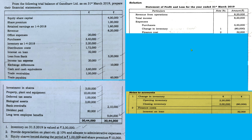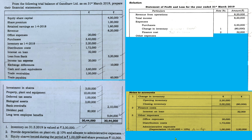Next is other expenses. We can see there are some items already included in the above heads. Other expenses mainly include administrative fees and distribution cost. We can also include one more thing: depreciation. You may think why depreciation is included under other expenses — because in the adjustment, it is mentioned to provide depreciation on plant and allocate it to administrative expenses. So depreciation has to be shown under other expenses. Depreciation on plant: plant value is 10 lakhs at 10%, giving 1 lakh. So the total other expenses come to 2,92,000.